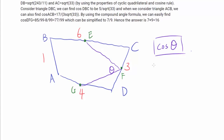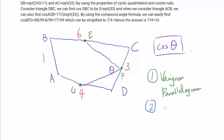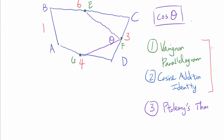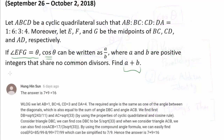I'm going to present three different proofs for this question. The first one uses the Varignon parallelogram. The second method uses the cosine addition identity. The final method, which I think is the most elegant, uses Ptolemy's theorem. For the first two solutions I will skip computation and leave it to you, but I will point out important parts. I want to recognize Hung In-sun, who was the first person to correctly answer this challenge problem with the answer of 16.